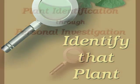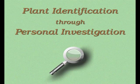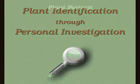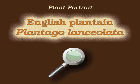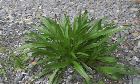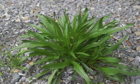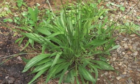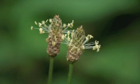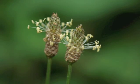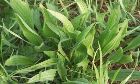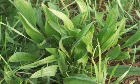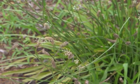You're watching Plant Identification Through Personal Investigation with Angeline Whitmire. This plant portrait is for English plantain, Plantago lanceolata. English plantain, a perennial plant, is frequently viewed as a perennial weed throughout North America, although it is native to Eurasia. Its range now extends to every continent. This plantain prefers disturbed areas including open grasslands and wastelands.